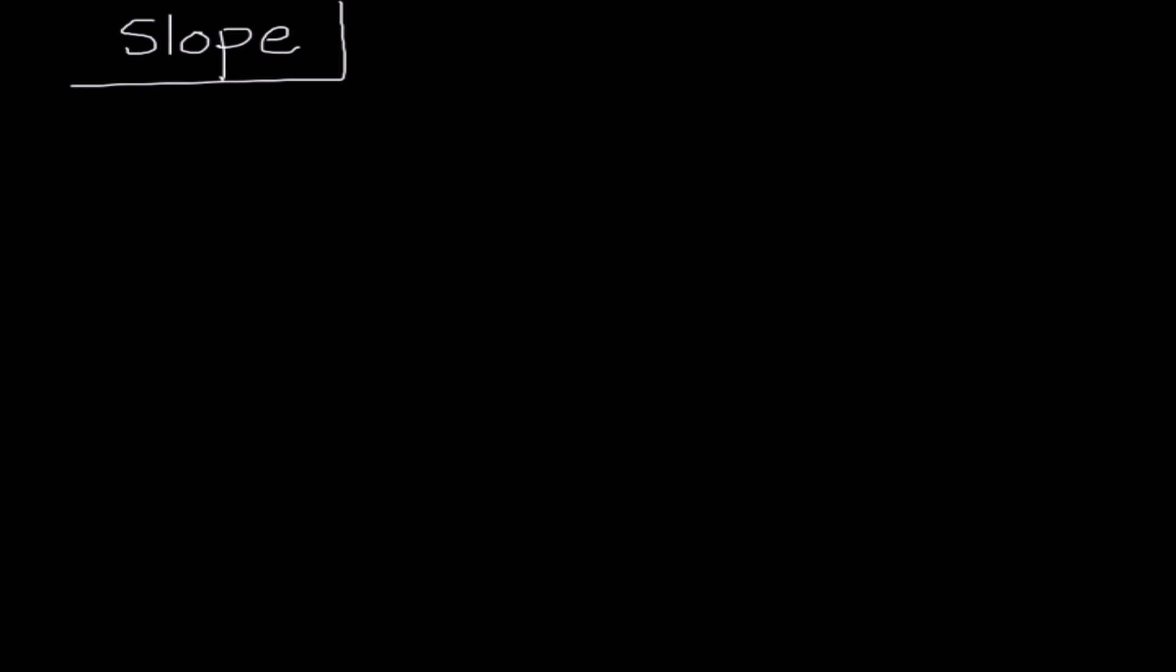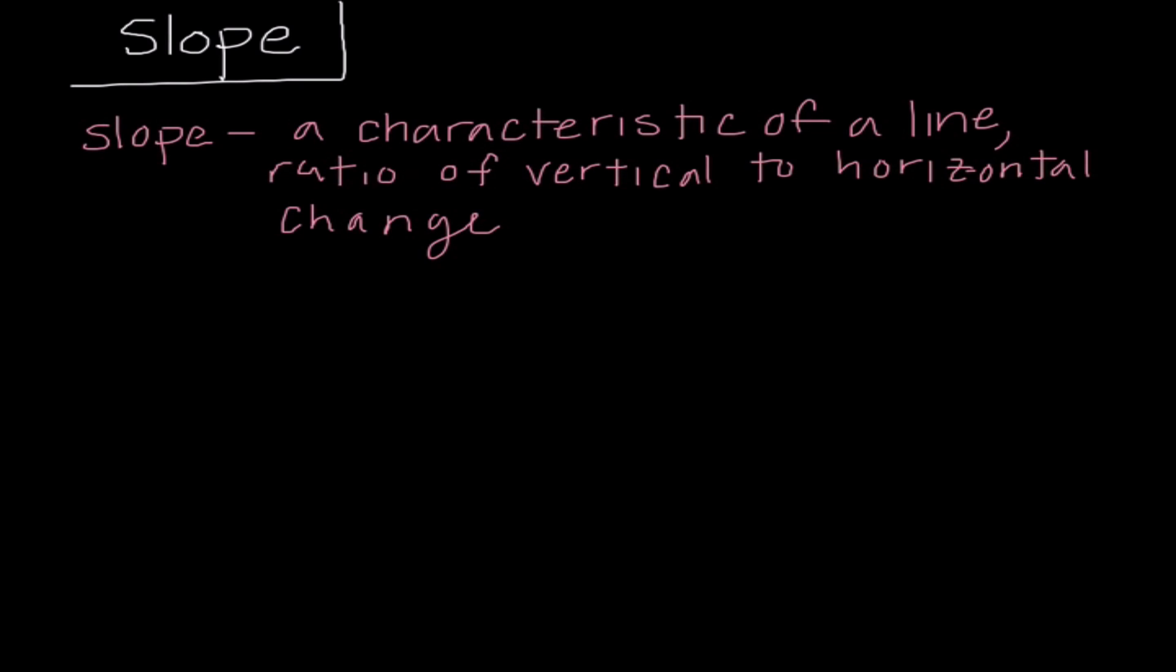Our definition of slope is that slope is a characteristic of a line. It is a ratio of vertical to horizontal change. And that brings us into some things that you guys have learned about slope before. You guys probably remember that we usually use the letter M to represent slope.